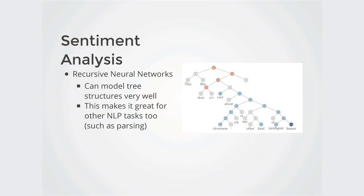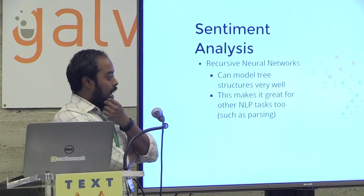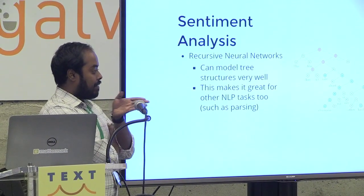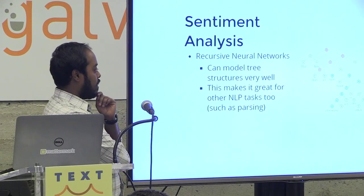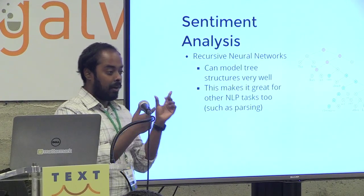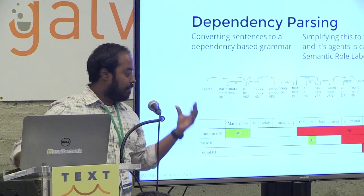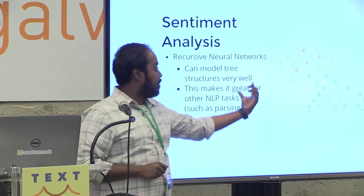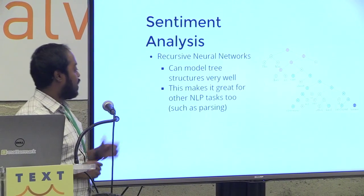Along those same lines, Richard Socher also worked on a sentiment analysis demo you can find at Stanford's NLP sentiment analysis website. About two years ago they broke the state-of-the-art record on the Penn Treebank sentiment analysis dataset by about 5% — a huge improvement — by doing recursive neural networks, taking a dependency parse tree structure of sentences and encoding it, then doing a neural learning task on that. It turns out it worked really well for sentiment analysis.